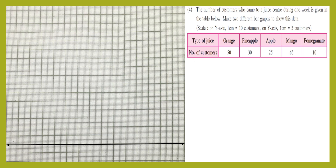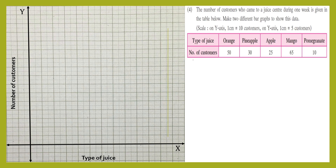Now let's start drawing the graph. A horizontal line is called the x-axis, and a vertical line is called the y-axis. Let's label them: capital X and capital Y. On the x-axis we will take the type of juice, and the number of customers will be taken on the y-axis. Let's write the scale on the top: on the y-axis, one centimeter equals ten customers.